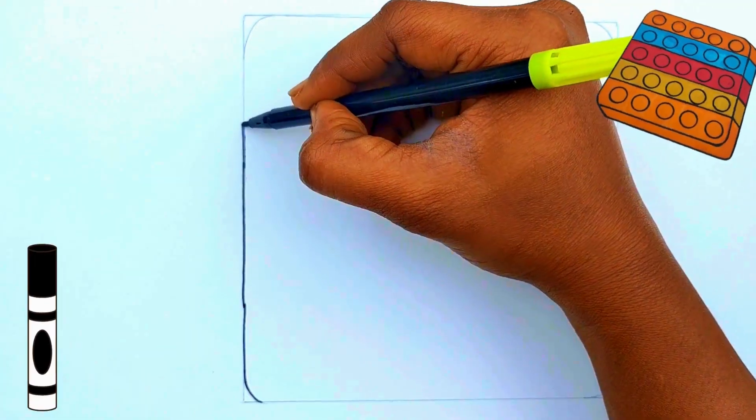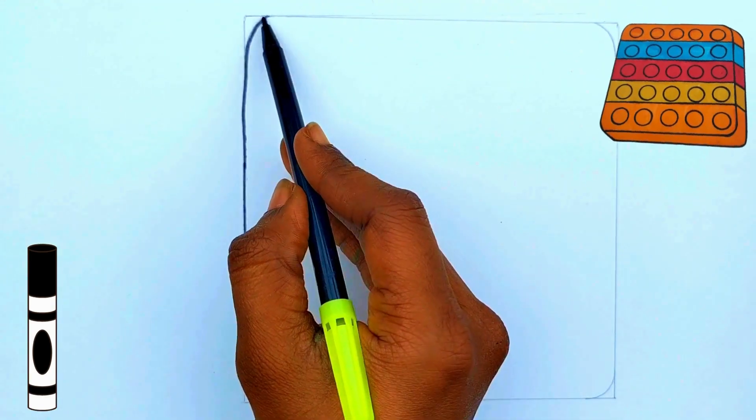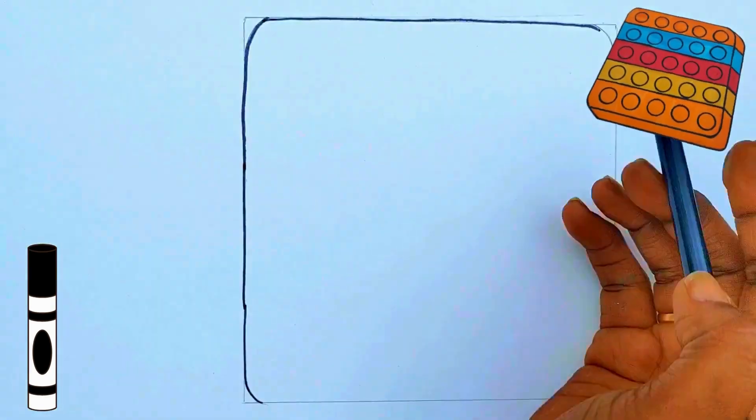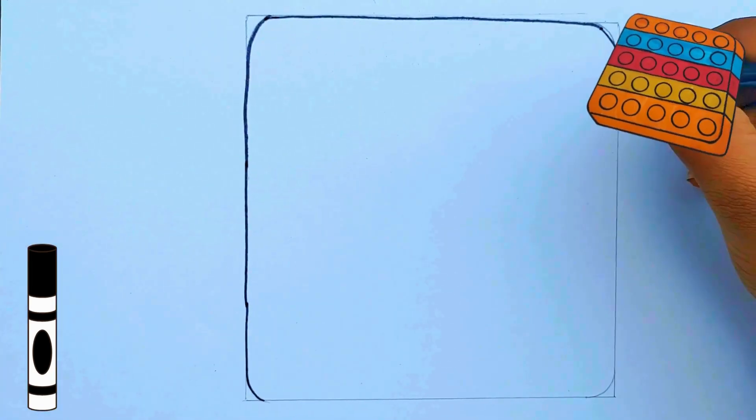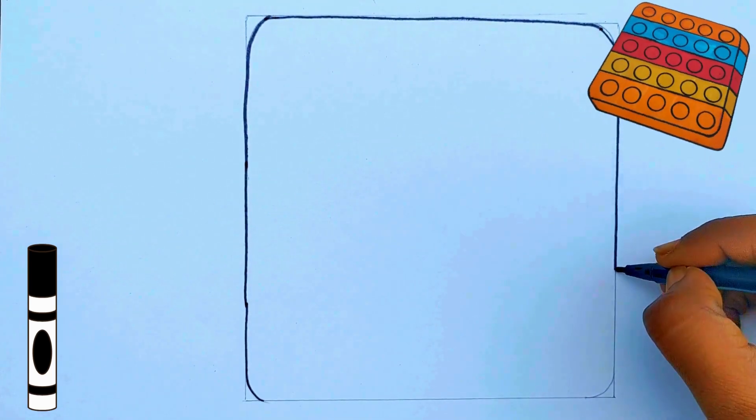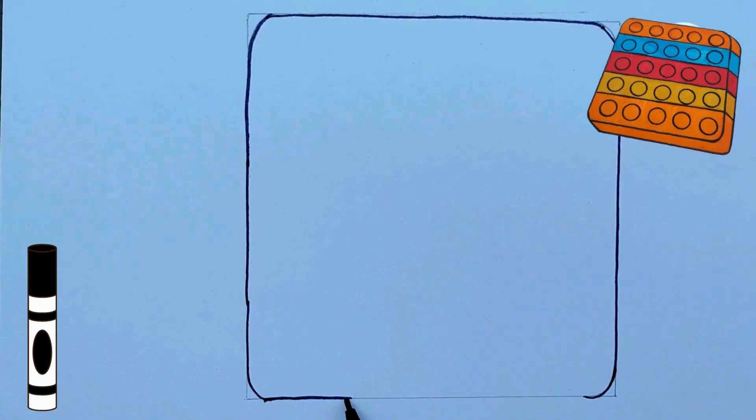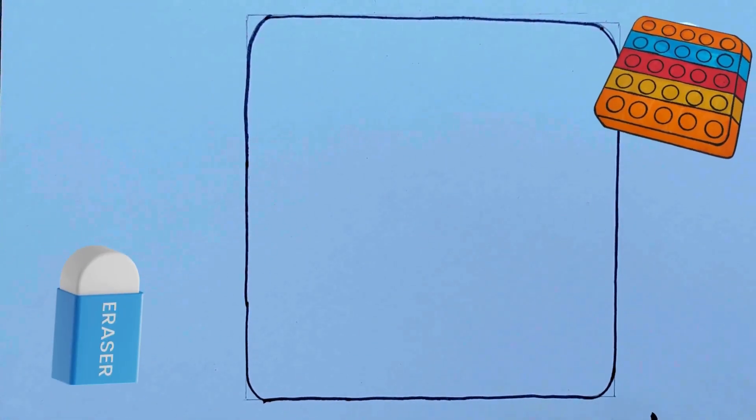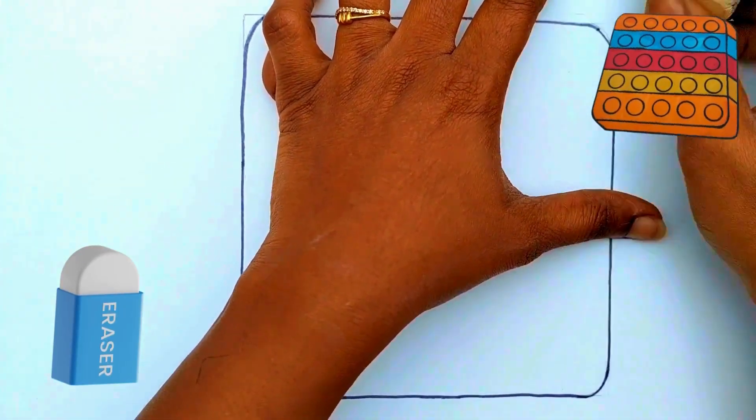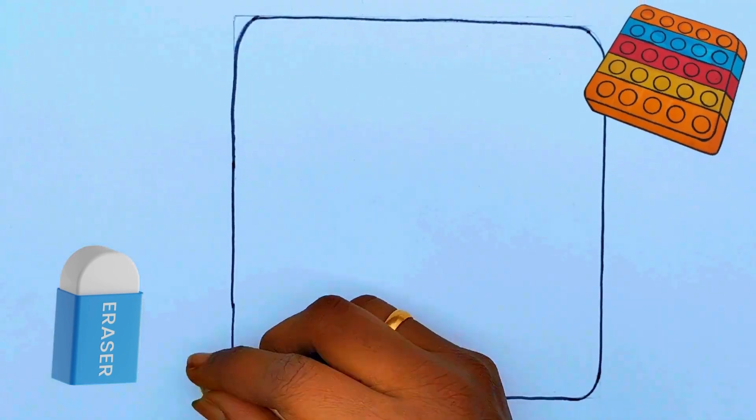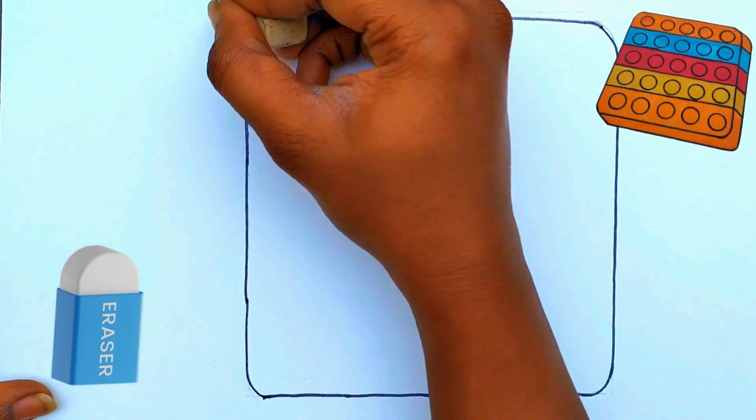Darken with sketch pen. Use eraser to erase the sharp edges.